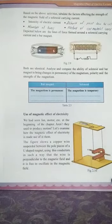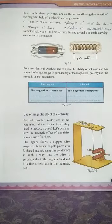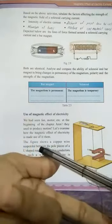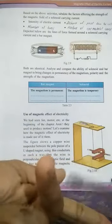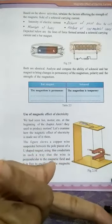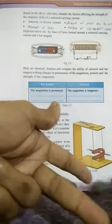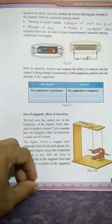To find the direction of the applied force we use Fleming's left hand rule. To state the rule: hold the forefinger, middle finger, and thumb of your left hand mutually perpendicular to each other. The forefinger points in the direction of the magnetic field, the middle finger in the direction of current, and the thumb will point towards the direction of force on the conductor.